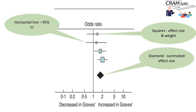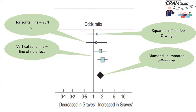Looking at the forest plot itself: the squares refer to the effect size and the weight of the studies. The weight, as discussed before, depends on sample size. The horizontal line on either side of the square refers to the confidence interval for that particular effect size. The diamond refers to the summated effect size — the aggregate of these four effect sizes. The centre of the diamond is your summated effect size.